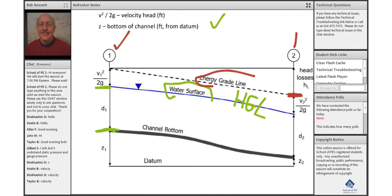And you see the slope of the energy grade line. And if we knew what the length of this channel was, it would be that loss of energy, h sub l,